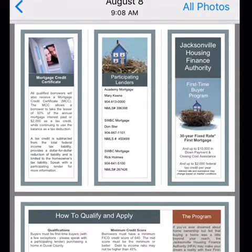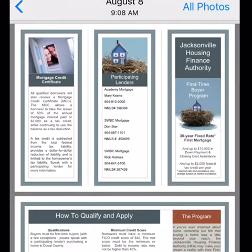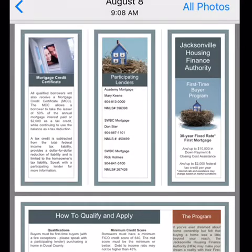The Jacksonville Housing Finance Authority has a first-time homebuyer program. It's a 30-year fixed-rate first mortgage with up to $10,000 in down payment and closing cost assistance and up to $2,000 federal tax credit per year. Participating lenders include Academy Mortgage. You can call Mary Keene at 904-813-0000. The mortgage credit certificate you receive will allow you to reduce your mortgage interest paid by $2,000 as a tax credit while continuing to use the balance as a tax deduction.